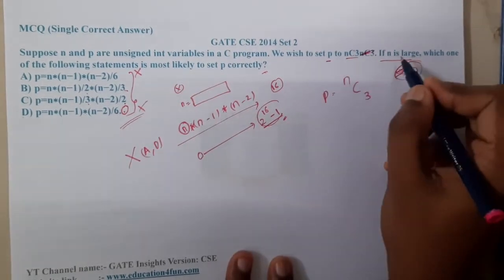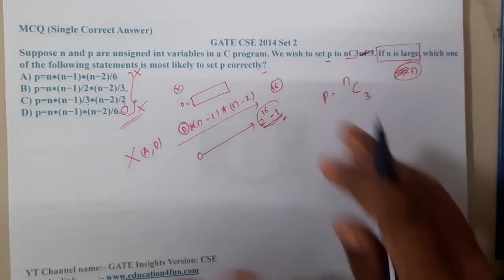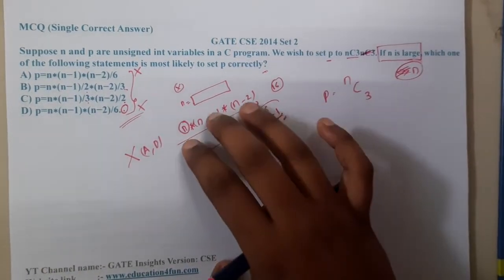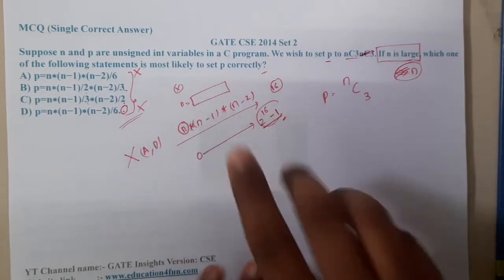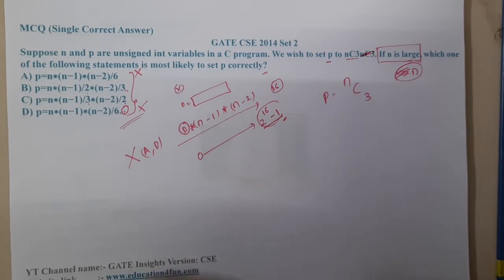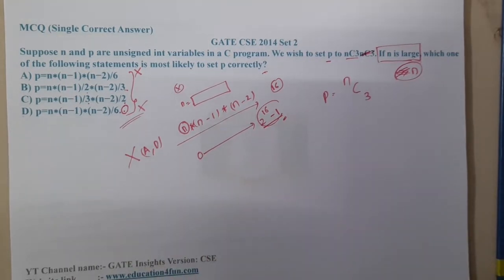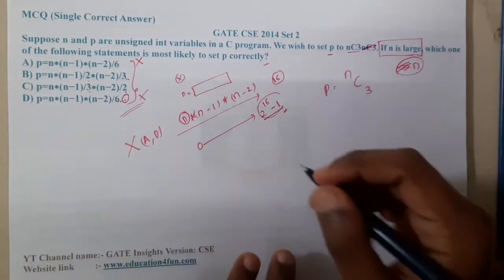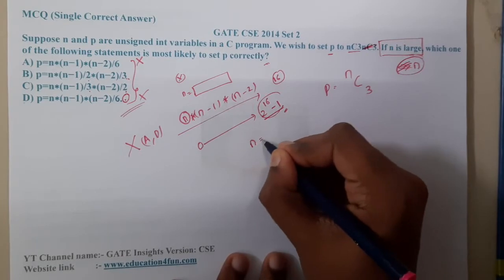That is the reason why A and D are not good for largest numbers. Because the values will exceed the storage limit, we can eliminate those two options. Now, if you observe carefully, in B and C there is a pattern. Let us take a small example with n equals 4.